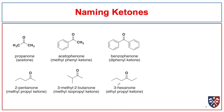Ketones take their name from the parent alkane as well. The ending E is removed and replaced with ONE. Here we see a three-carbon ketone — that is the smallest ketone we could have, because without a carbon on each side, hydrogen would make it an aldehyde. In the case of propanone, we don't have to indicate where the carbonyl carbon is, because it can only be in the two position. For pentanone, we can have 2-pentanone or, with the double bond in the three position, 3-pentanone.